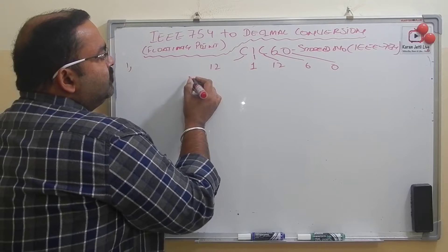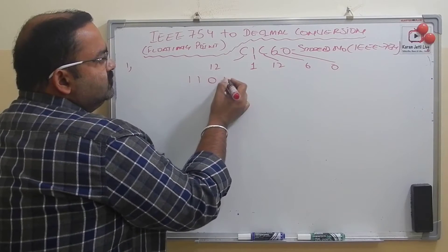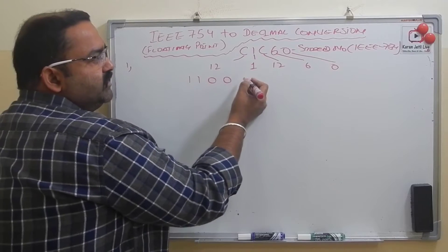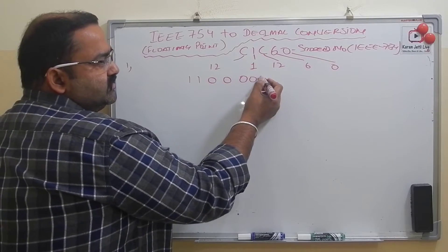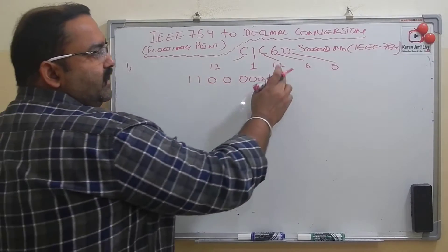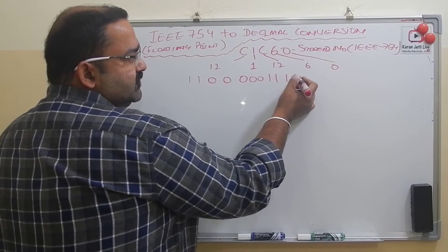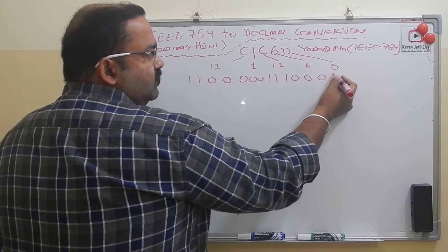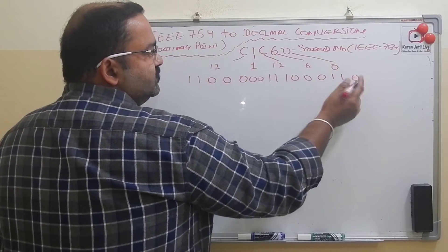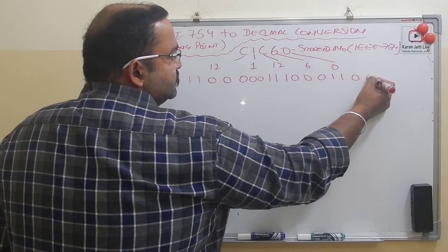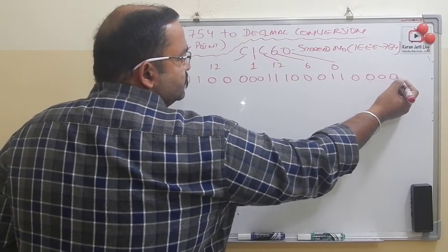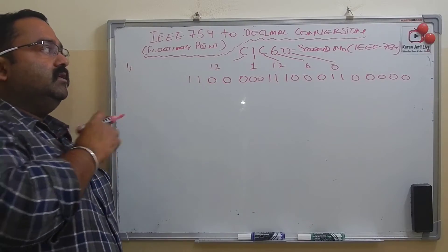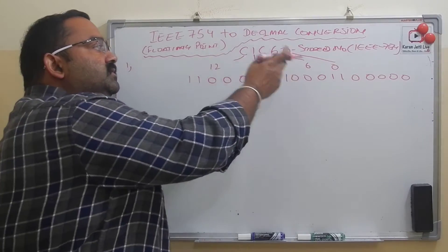12 in binary is 1100. What is 1 in binary using four bits? 0001. Then again C (12) is 1100, six is 0110, and zero is 0000. So step one is complete — we converted this hexadecimal number to binary.